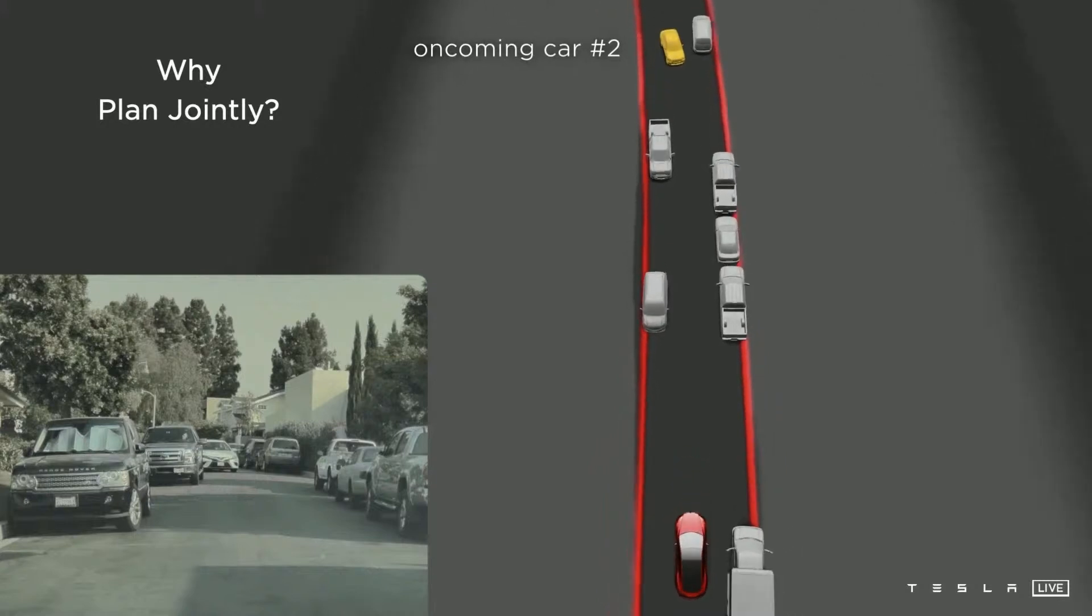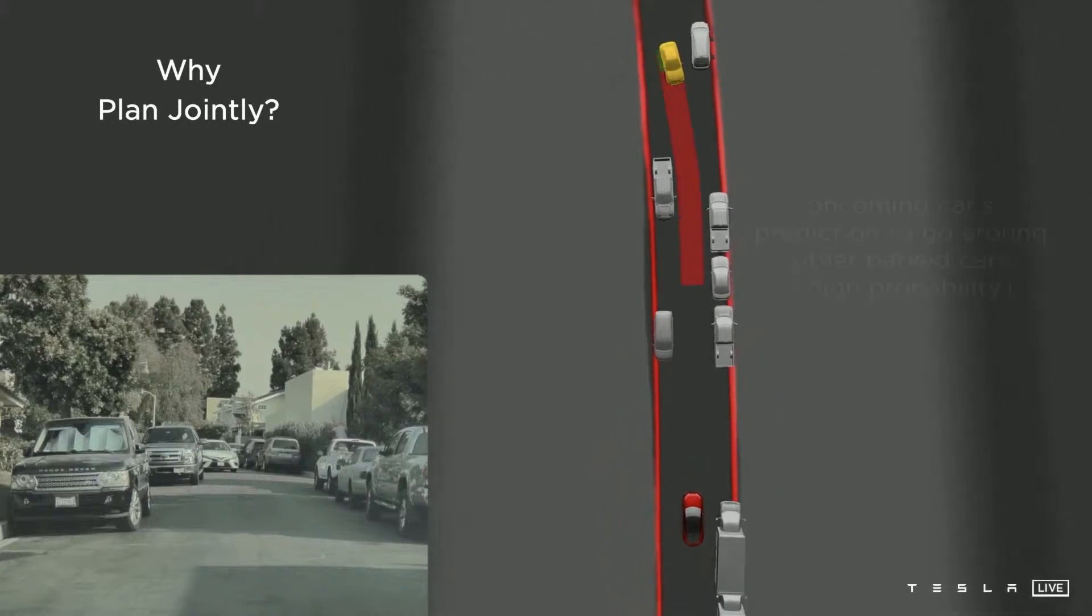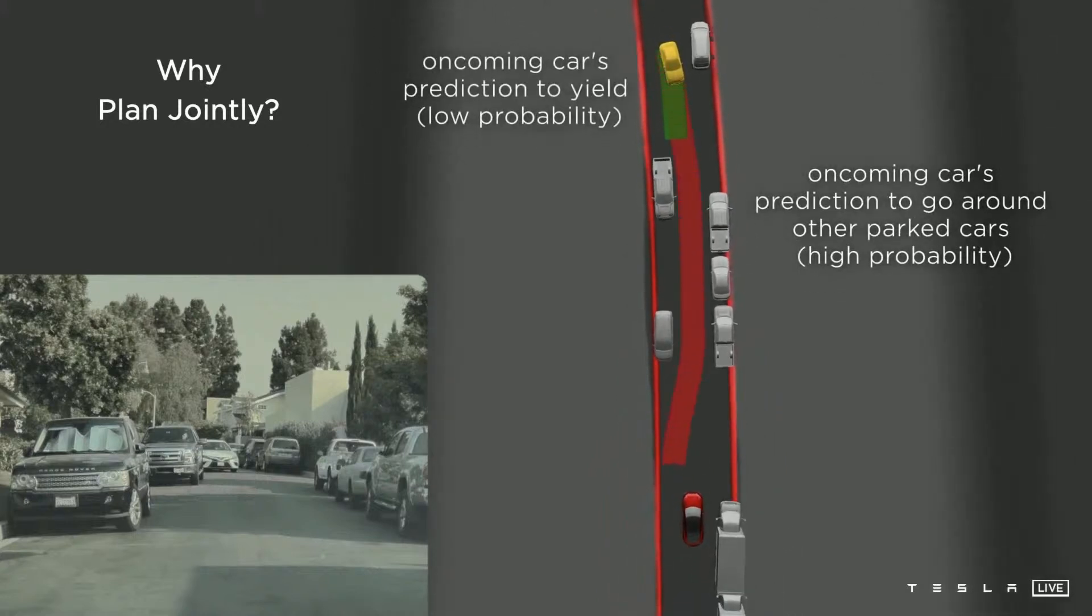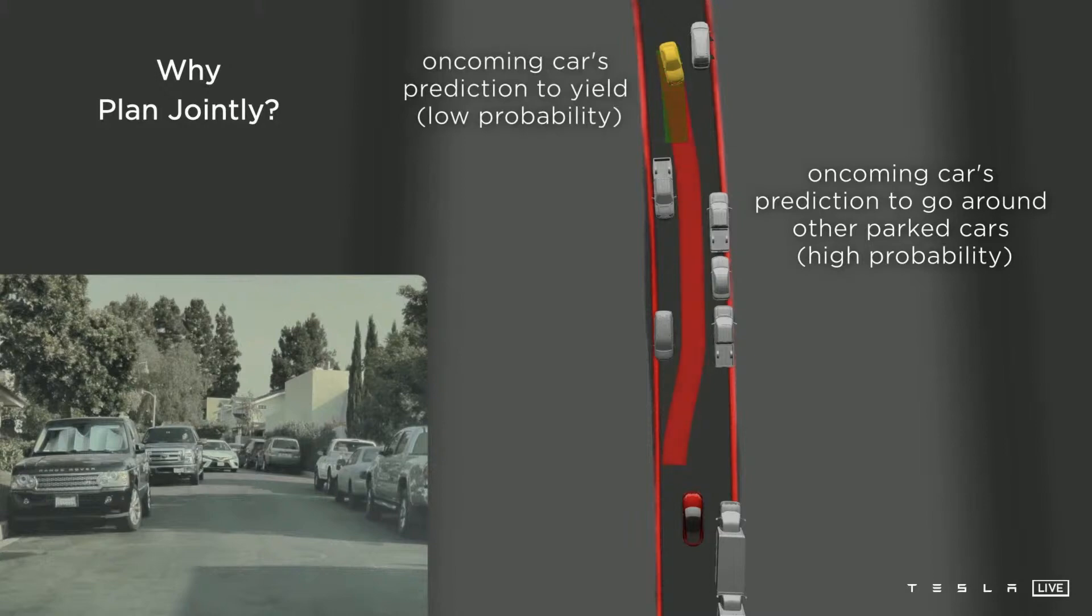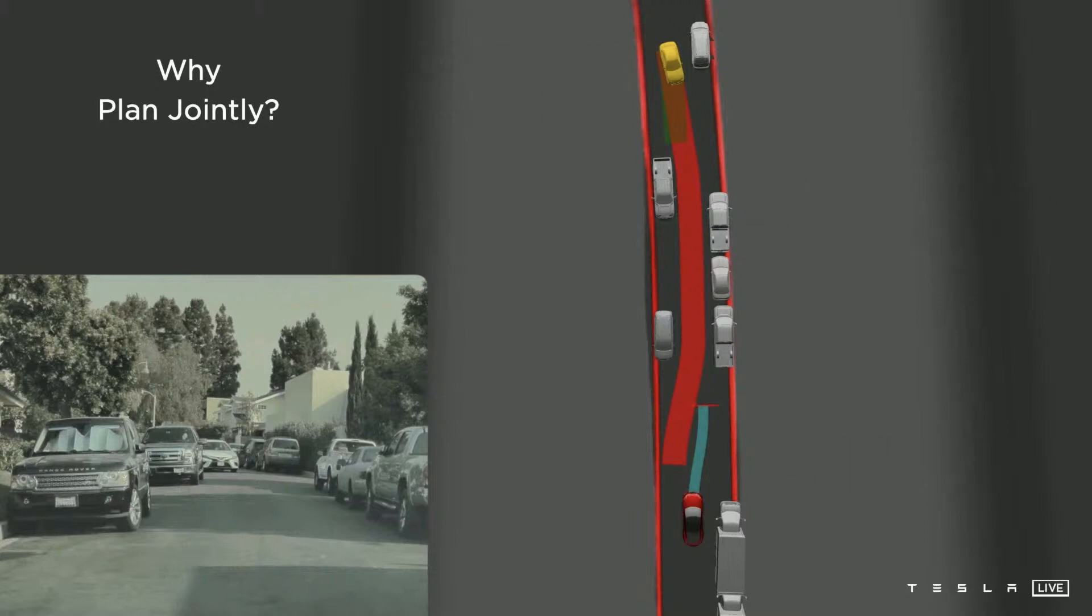A second oncoming car arrives now. This vehicle has higher velocity, and like I said earlier, we literally run the autopilot planner for the other object. So in this case, we run the planner for them. That object's plan now goes around their side's parked cars, and then after they pass the parked cars, goes back to the right side of the road for them.